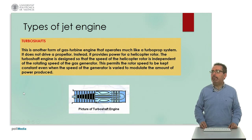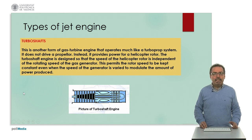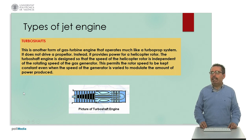We also have another type called turboshafts. This is another form of gas turbine engine that operates like a turboprop system. However, it does not drive a propeller. Instead, it provides power for a helicopter rotor, using a rotor as a moving part. The turboshaft engine is designed so that the speed of the helicopter rotor is independent of the rotating speed of the gas generator, and this has a number of mechanical advantages.